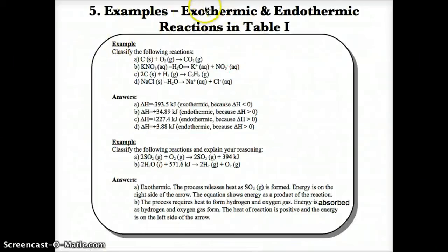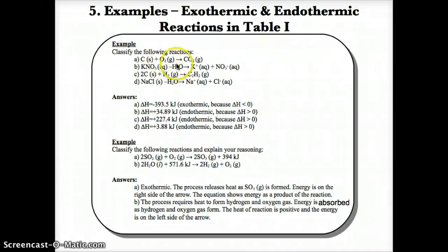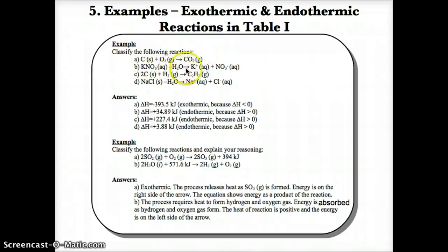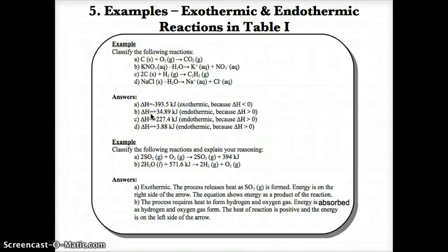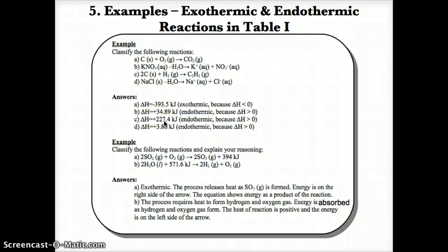Let's classify reactions using delta H values from Table I. Reaction A: C(s) + O₂(g) → CO₂(g), delta H = −393.5 kJ, so it's exothermic. Reaction B: KNO₃(aq) → K⁺ + NO₃⁻, delta H = +34.89 kJ, so it's endothermic. Reaction C: 2C + H₂ → C₂H₂, delta H = +227.4 kJ, so it's endothermic.